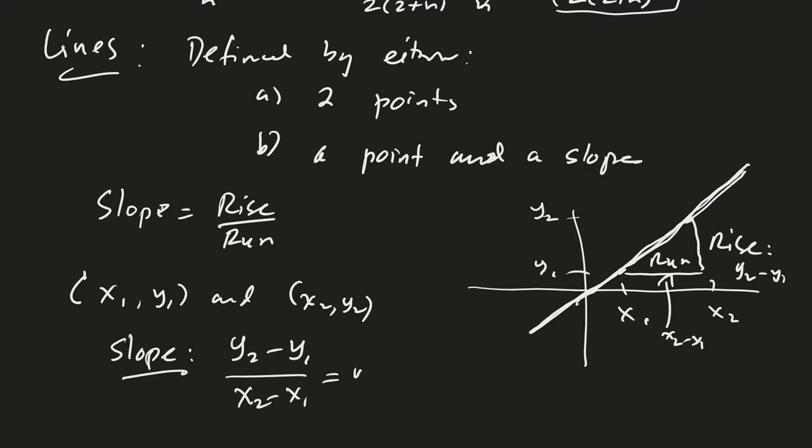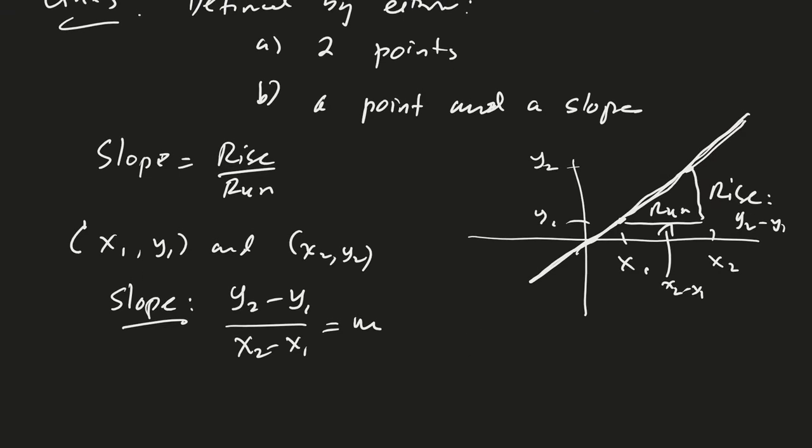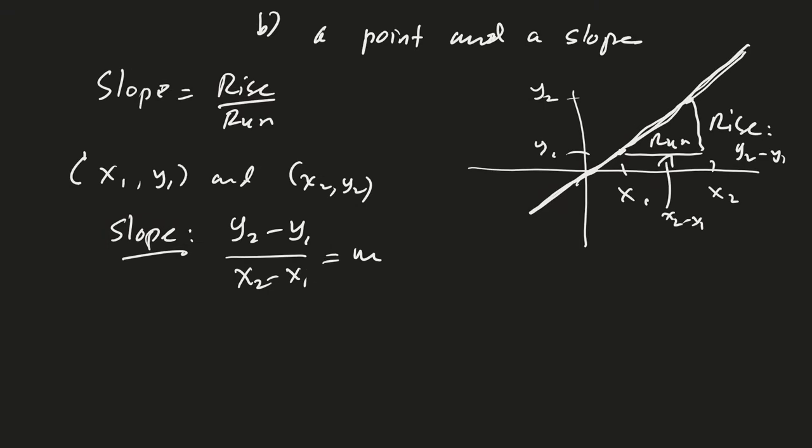So once you get the slope, let's call that m, you might remember that there's two ways of defining a line. The point-slope form is, given the point (x1, y1) and the slope m, then the point-slope form will give us y minus y1 equals m times (x minus x1). So in this case, we computed our m up here, our slope.